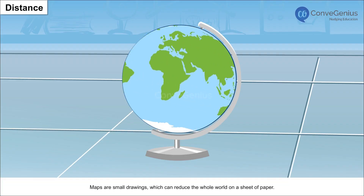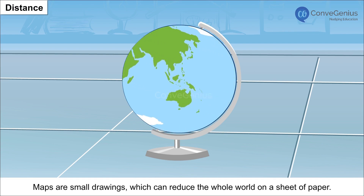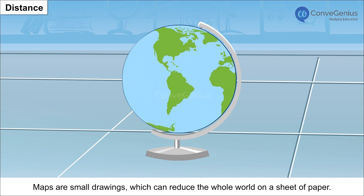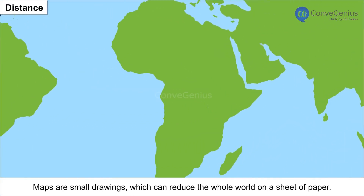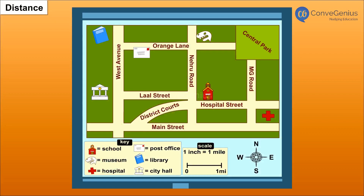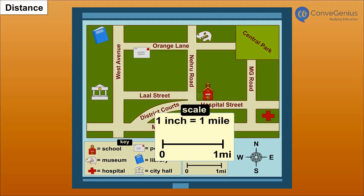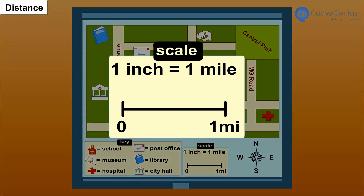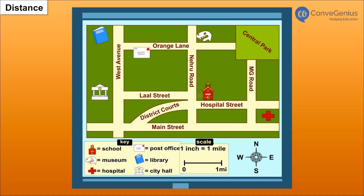Distance: Maps are small drawings which can reduce the whole world on a sheet of paper. Scale plays a significant role in a map. It is the ratio between the actual distance on the ground and the distance shown on the map. On the basis of scale, maps are categorized into two types.